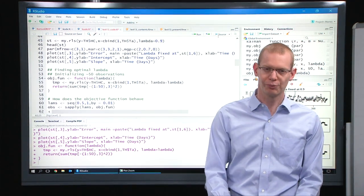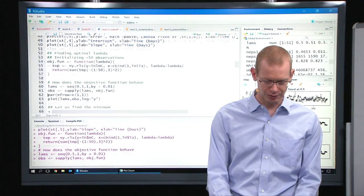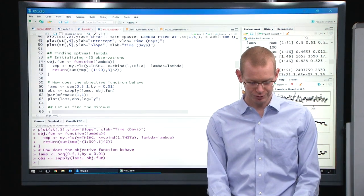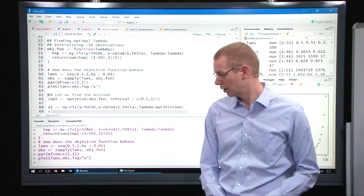So first, let's just pick some lambdas and then calculate the objective function for our sequence of lambdas and plot that. So what do we see?